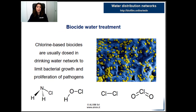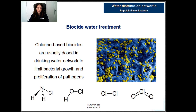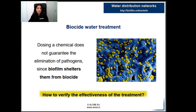Usually, in water pipelines chlorine-based biocides are used — for example, monochloramine, hypochlorous acid, or chlorine dioxide. The problem is that biofilm protects and shelters bacteria from biocides. So, even if you sanitize, you are not sure to completely eliminate bacteria. So, how to guarantee the effectiveness of the biocide treatment?